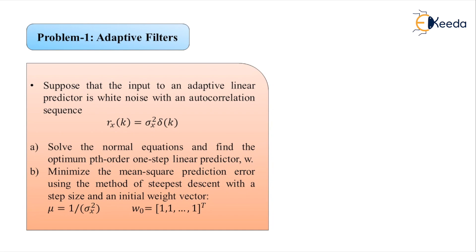Let us find the solution to Part A. In the solution to Part A, we consider the normal equations that we have learned, focusing on these normal equations with respect to linear prediction, which were covered in topics 1, 2, and 3 of this chapter. The question is to solve the normal equation and find the optimum p-th order one-step linear predictor denoted by w.